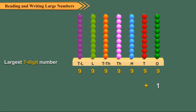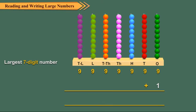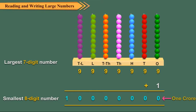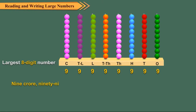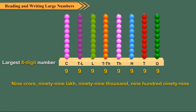When one is added to this number, we get the smallest eight-digit number: 1,00,00,000. The largest eight-digit number is 9,99,99,999, which we read as 9 crore, 99,99,999.